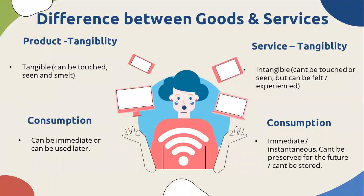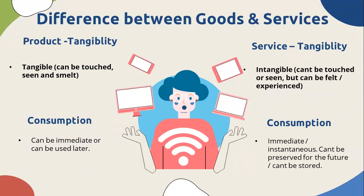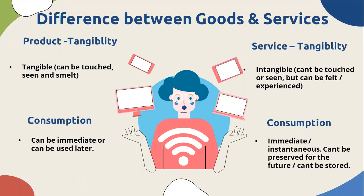A product can be touched, seen, or smelled. Services can't be touched, seen, or felt — they can only be experienced. For products, consumption can happen immediately or the product can be used later. This cannot happen with services. Services are expected to be consumed immediately and cannot be preserved for the future.